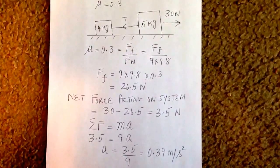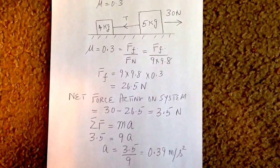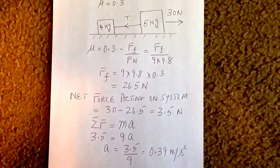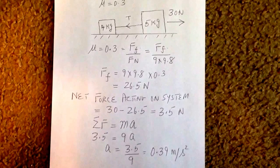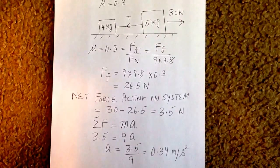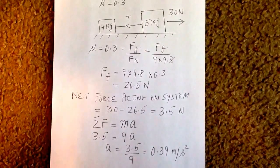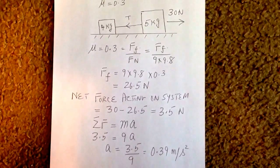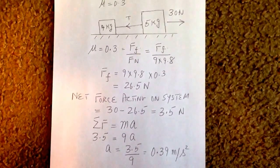Therefore, the net force acting on the system is 30 take away 26.5 or 3.5 newtons. It is this net force that is moving the two blocks.